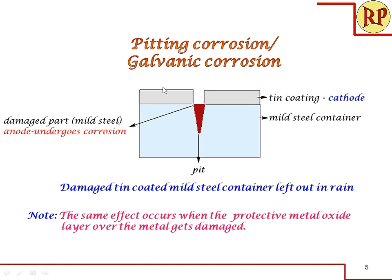The same effect occurs when the protective metal oxide layer on the metal gets damaged. All metals form a metal oxide layer over them, and even if that layer is protective in nature, if there is a damage, the damaged portion acts as the anode. If the damage is very small, the anodic area is small and the cathodic area is large, leading to pitting corrosion.